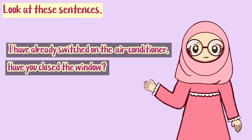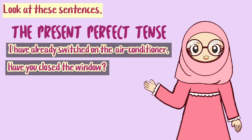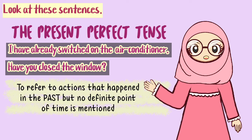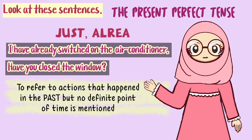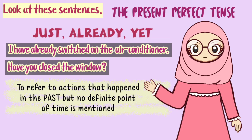Look at these sentences — they are in the present perfect tense, used to refer to actions that happened in the past but no definite point of time is mentioned. We use the present perfect tense with indefinite time adverbs such as just, already, and yet.